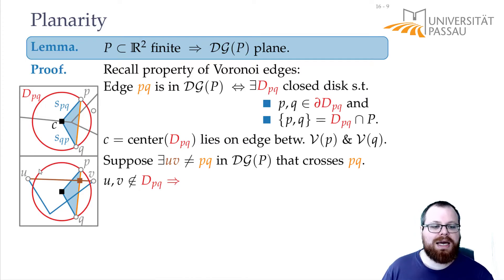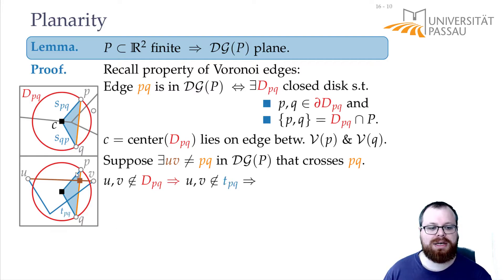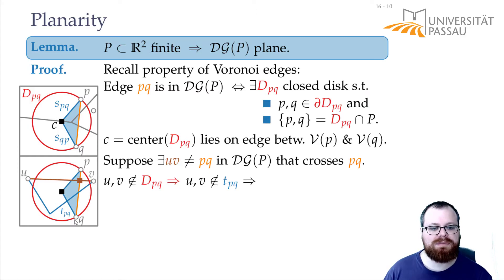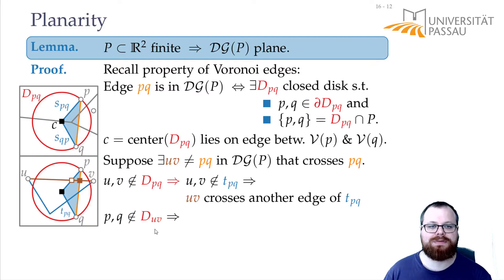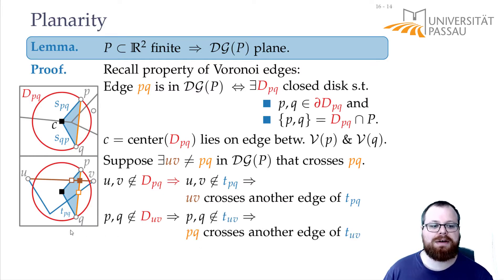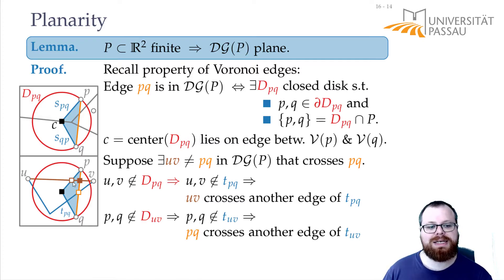U and V cannot lie in the disk of P and Q because we have this edge. That means U and V also cannot lie inside the triangle formed by P, Q and center C. So the only way we have this crossing between U-V and P-Q is that this edge also crosses another point of this triangle. Symmetrically, P and Q cannot lie inside the disk of U and V, so we must have another crossing between P-Q and the triangle of U-V. That's exactly the same argument. So now we have two triangles that intersect in exactly three points — but that's not possible, since they must intersect in an even number of points.